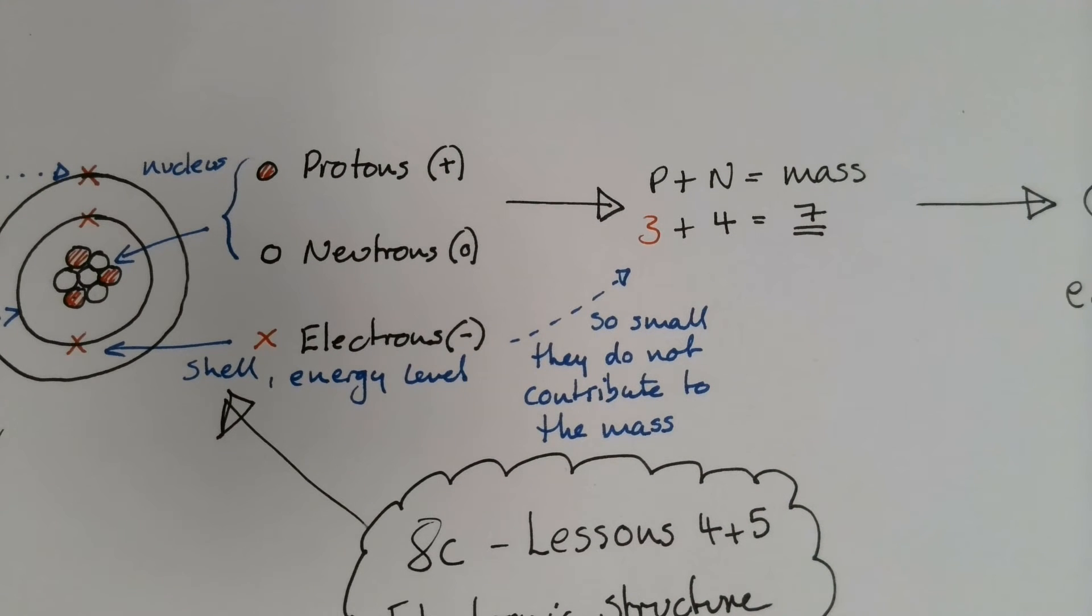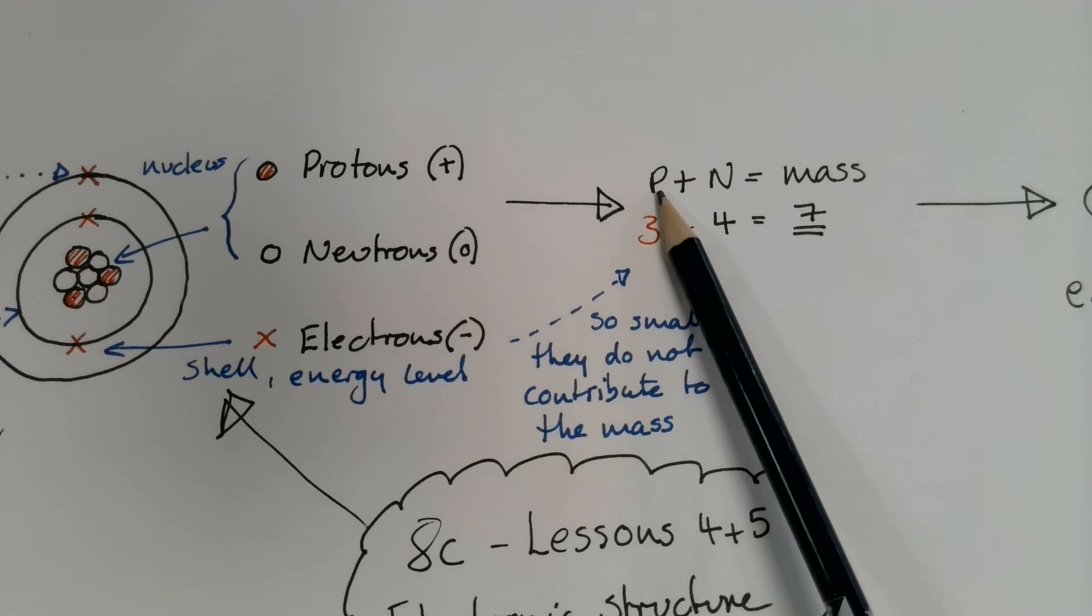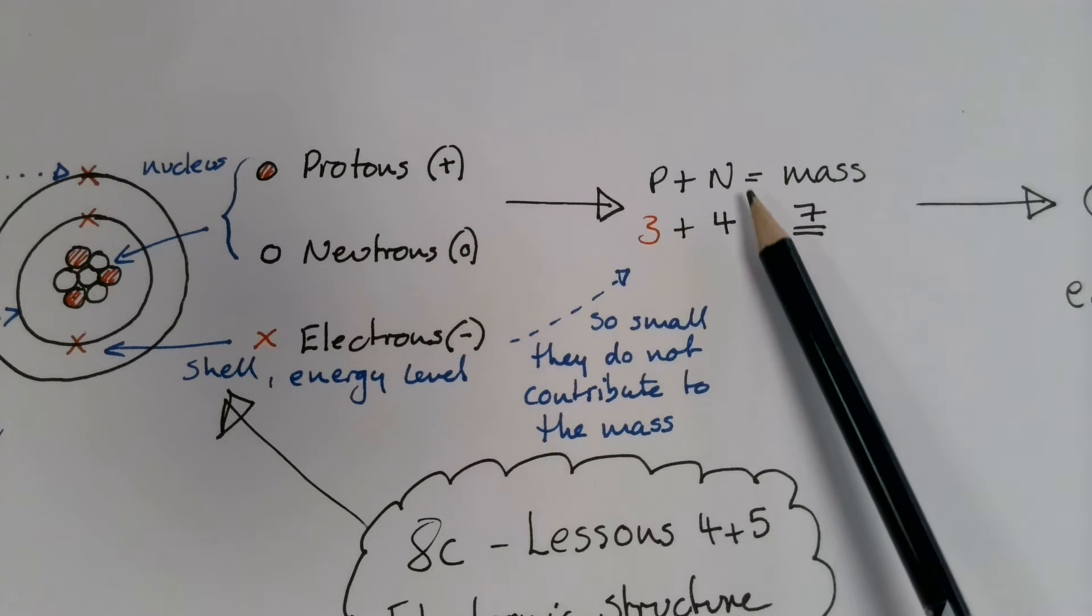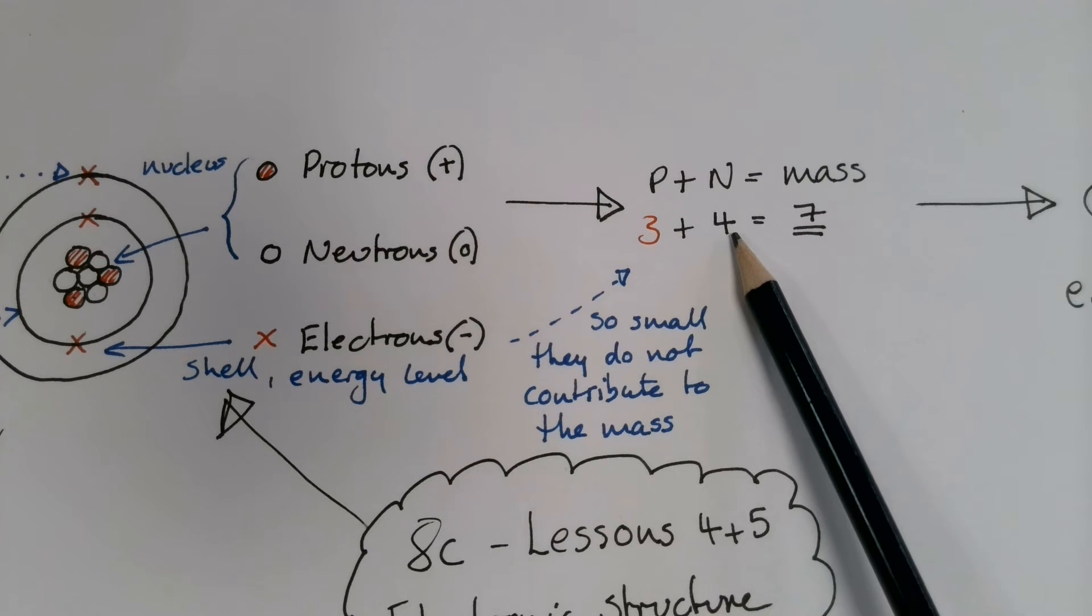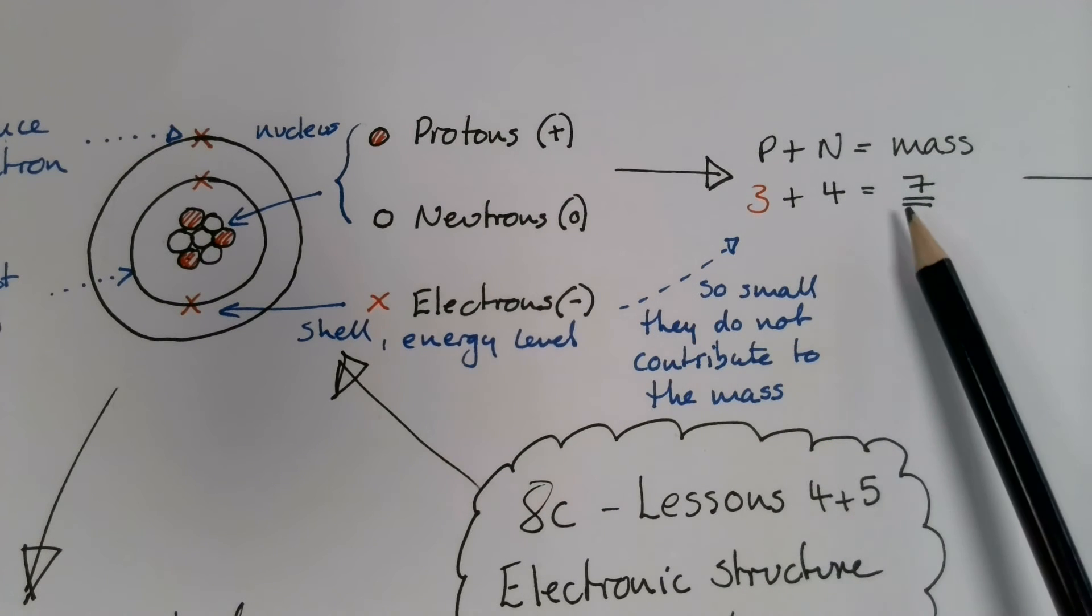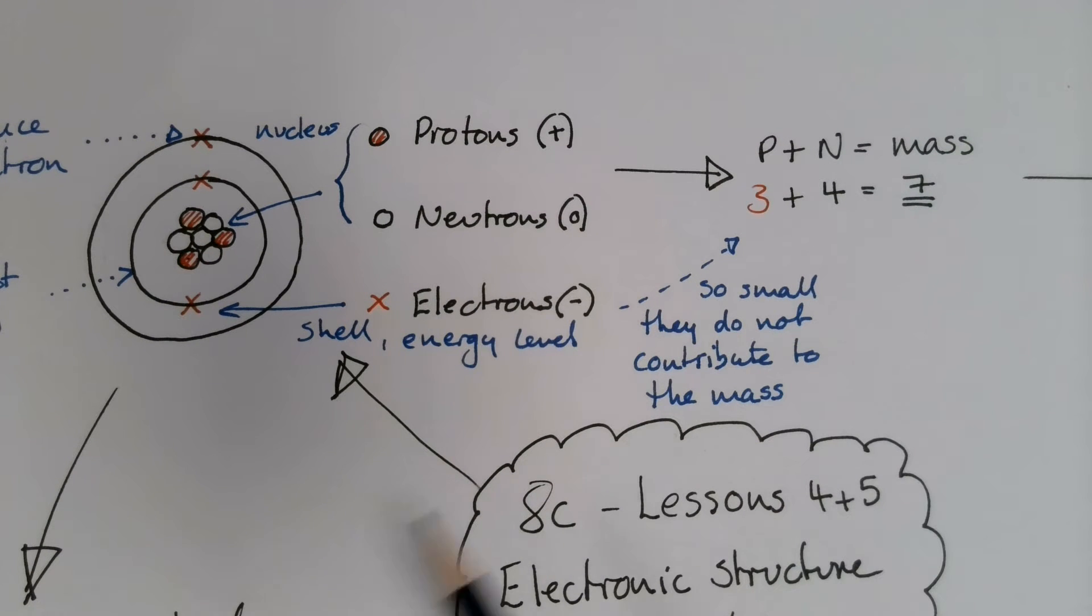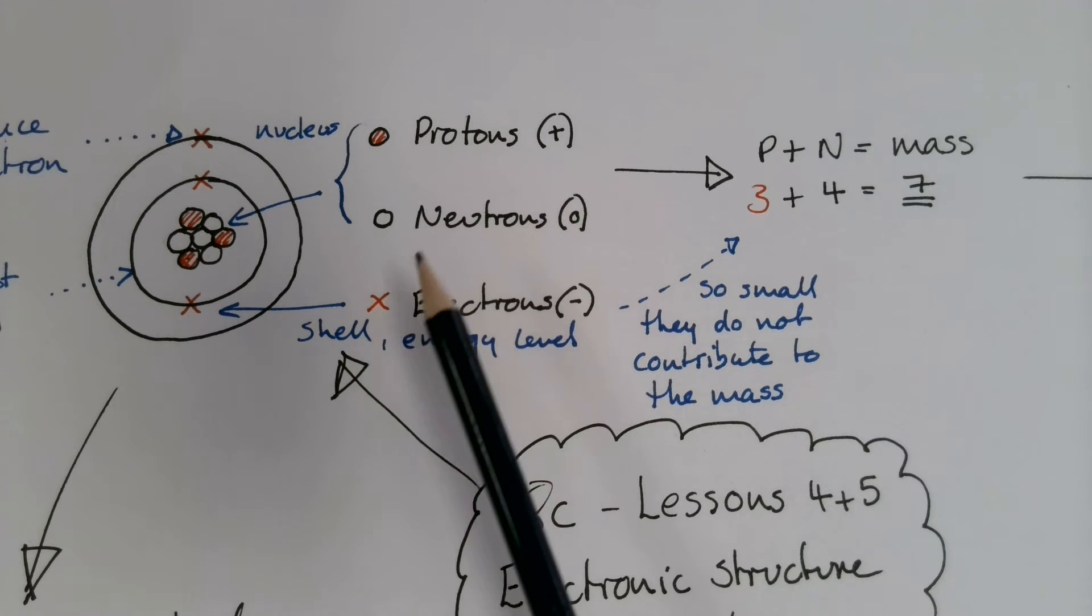If we then have a look at the nucleus in a bit more detail, we can work out the overall mass of the atom just by adding together the number of protons, three, and the number of neutrons, four. And in this example, we have a mass of seven. We don't include the electrons because these are so small they don't contribute to the overall mass. They're very tiny compared to the protons and the neutrons.